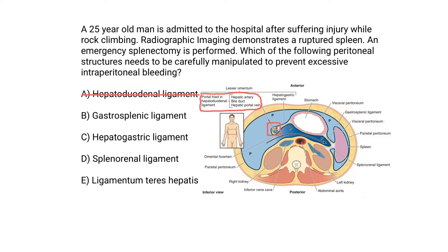Answer B: the gastrosplenic ligament. The gastrosplenic ligament contains the short gastric artery, which supplies the fundus. That's not going to be supplying the spleen, so we can eliminate this answer.